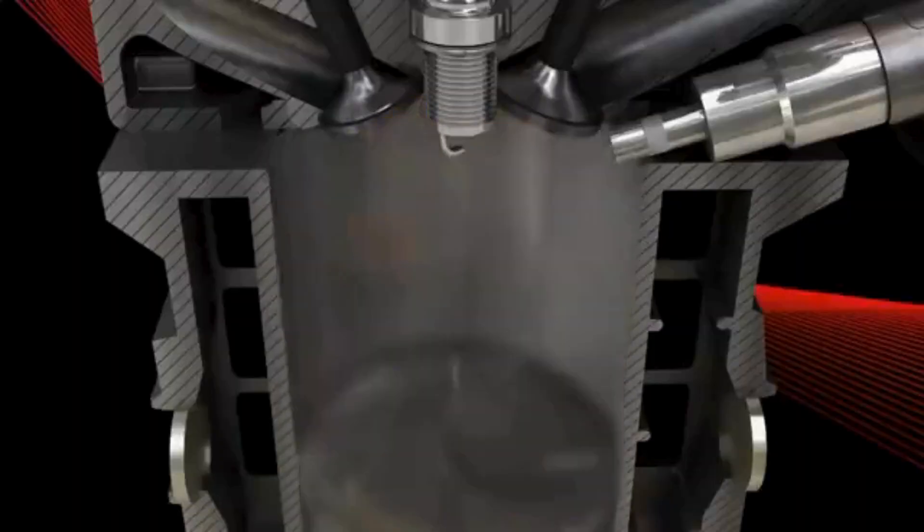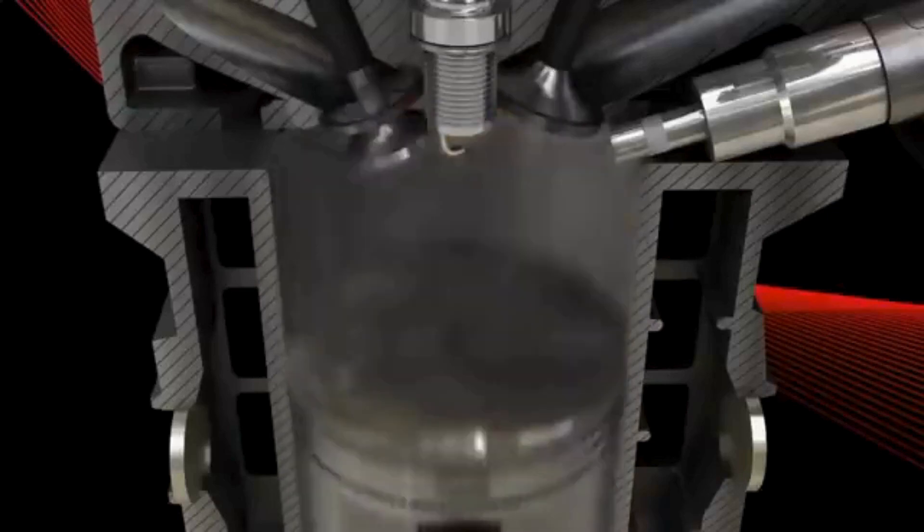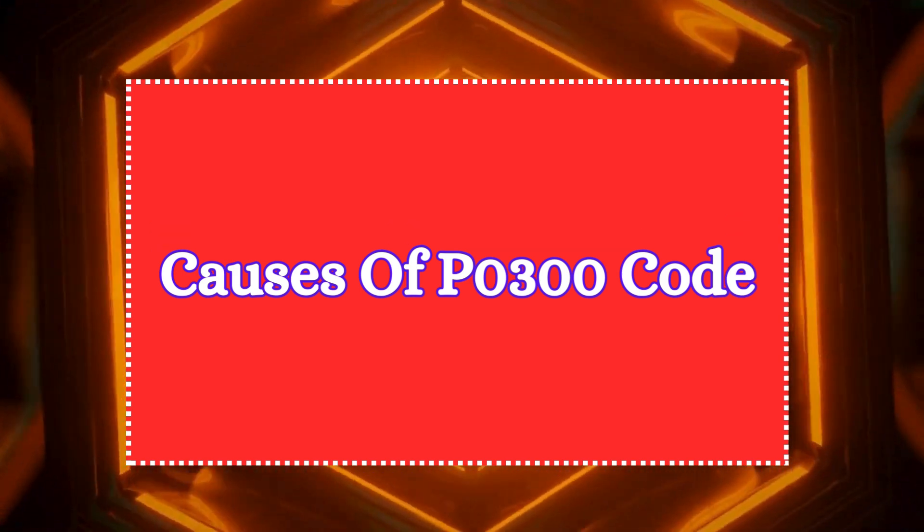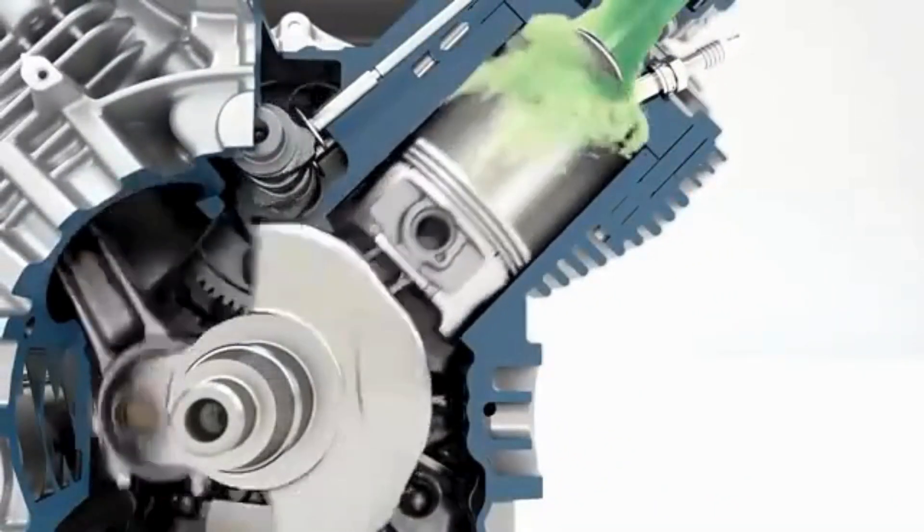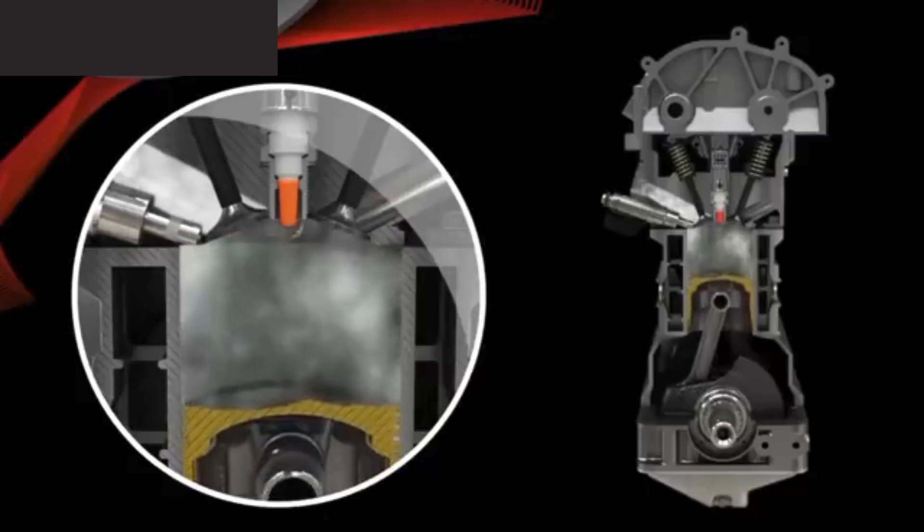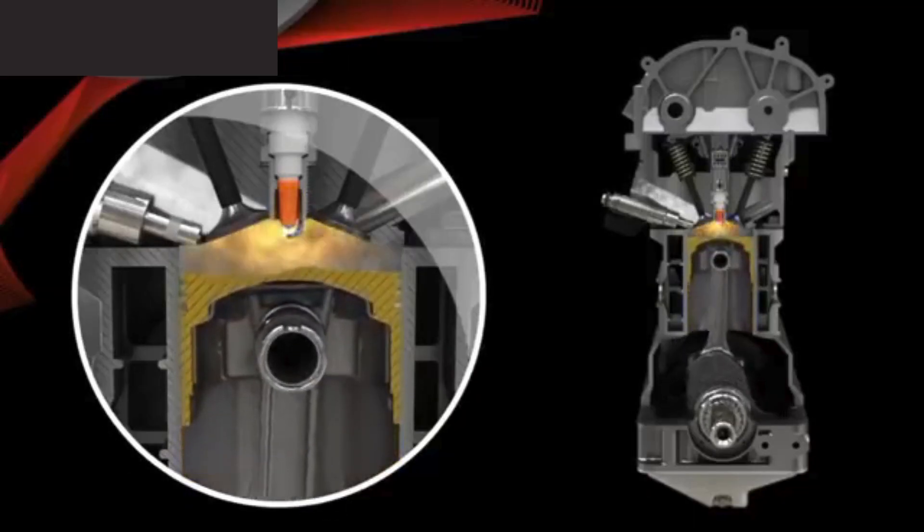Let's discuss the causes of P0300 trouble code. First, faulty spark plugs. Spark plugs ignite the air-fuel mixture in the engine's cylinders. If they are worn, dirty, or damaged, the spark they produce may be weak or inconsistent, leading to incomplete combustion and misfire.